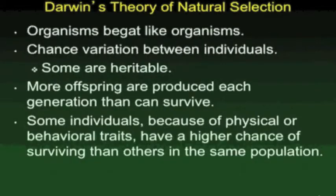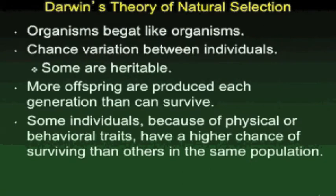Darwin eventually developed his theory of natural selection. The basic idea is that organisms reproduce and produce other organisms that are very much like themselves, but there is chance variation between individuals, and some of these variations can be inherited from one generation to the next. As there are more offspring than an environment can support because of a limitation of resources, some individuals are going to die. The individuals that are best adapted or best suited for an environment, based on their particular variations, will survive.